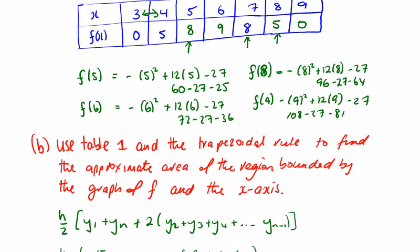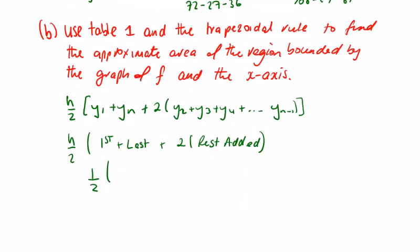The first one and the last one are both zero in this case, and the rest added together: 5 and 5 is 10, 8 and 8 is 16, 26 and 9 is 35. So it's 0 plus 0 plus twice 35, which is half of 70, which is 35 square units. We're dealing with area here.